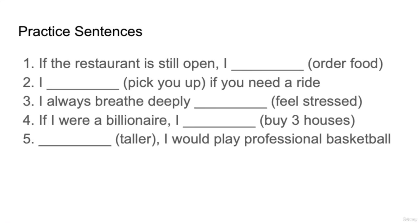Now here we have five practice sentences, and we are going to practice using zero, first, and second conditional. Take a look at the sentences around the blanks to give you a clue at the appropriate tense. The words in brackets are: order food, pick you up, feel stressed, buy three houses, and taller. Choose the correct conditional based on the sentences around each blank. Pause the video and pick the correct conditional.